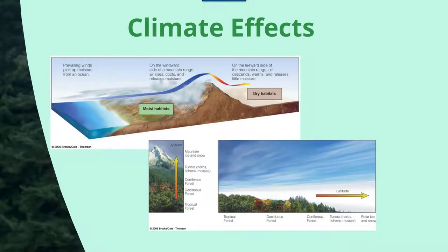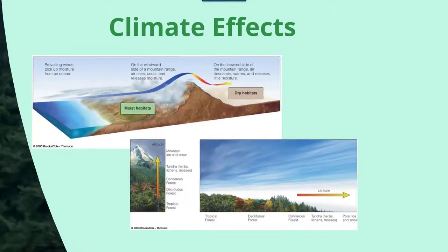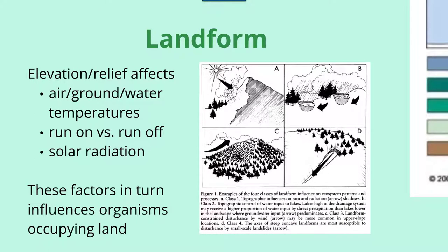Climate is impacted by the presence or lack of moisture in the air, so not only precipitation but the potential for moisture to exist within a habitat is important. Additionally, altitude and latitude can influence the ecology that exists in a given area — as you increase in altitude, you typically change from one form of ecosystem to another, and a similar thing happens across latitudes where there's a change in temperature as well as moisture and precipitation. The landform consists of elevation or relief effects, which can influence air, ground, or water temperatures, the amount of run-on or run-off, and the solar radiation present. These factors in turn are going to influence organisms that occupy that land.